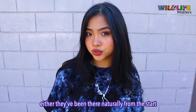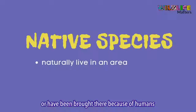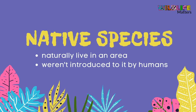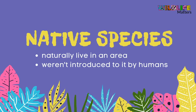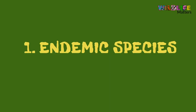The animals we see today exist in those areas because either they've been there naturally from the start, or have been brought there because of humans. Native species are species that naturally live in an area and weren't introduced there by humans. Let's talk about two types of native species.